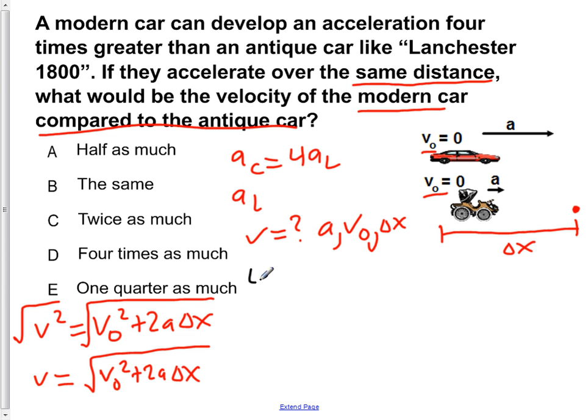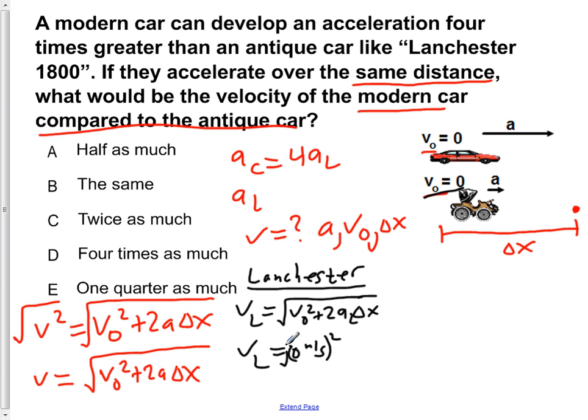Now the velocity of the Lanchester. I'm going to find the velocity of that. vL, the velocity of the Lanchester, is equal to square root of its initial velocity squared plus 2aL, the acceleration of the Lanchester, times the distance it traveled over this delta x as we stated in the beginning. We plug in our knowns. v initial of the Lanchester is 0 meters per second. So 0 meters per second squared plus 2aL delta x. So vL is square root 2aL delta x.